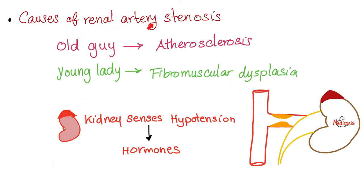Some causes of renal artery stenosis: in older patients, atherosclerosis is number one; in young women, fibromuscular dysplasia is very common. Regardless of the cause, if the renal artery is narrow, less blood reaches the kidney. The kidney senses low perfusion pressure and responds by releasing renin to try to raise blood pressure, which can lead to hypertension.